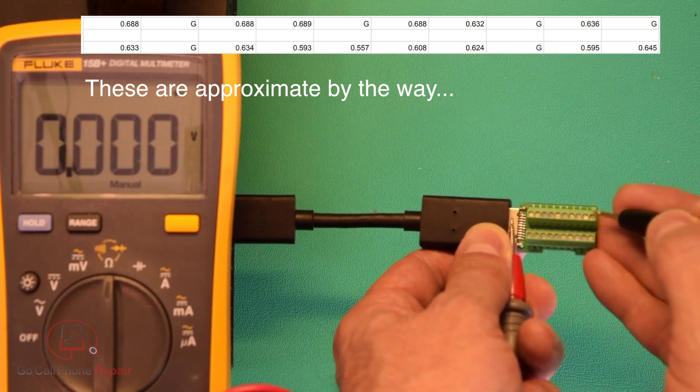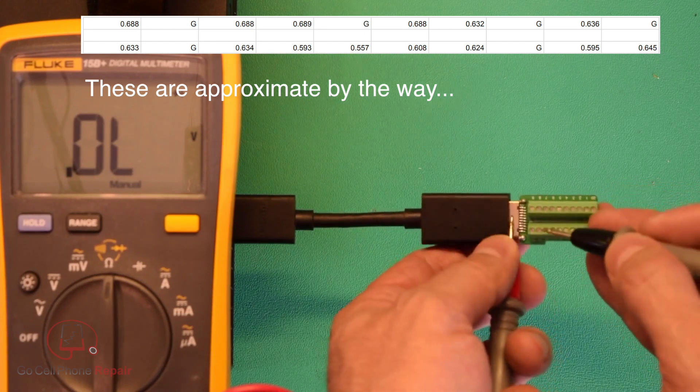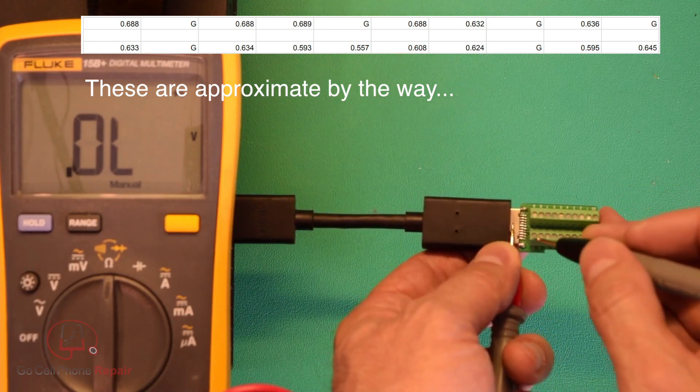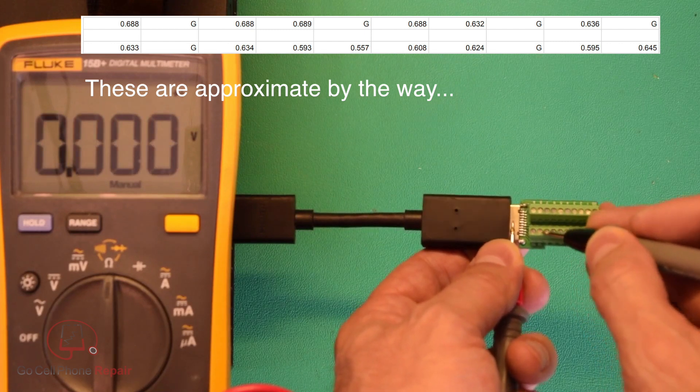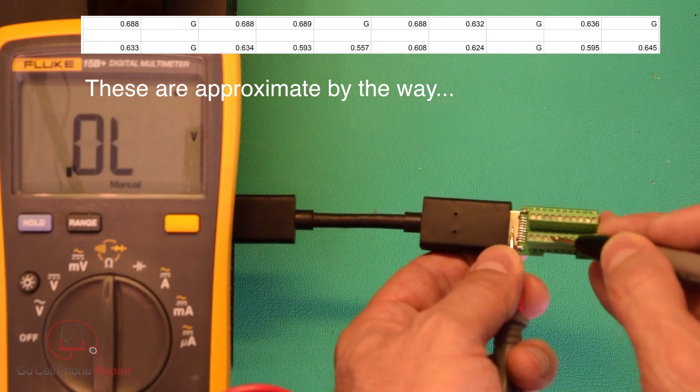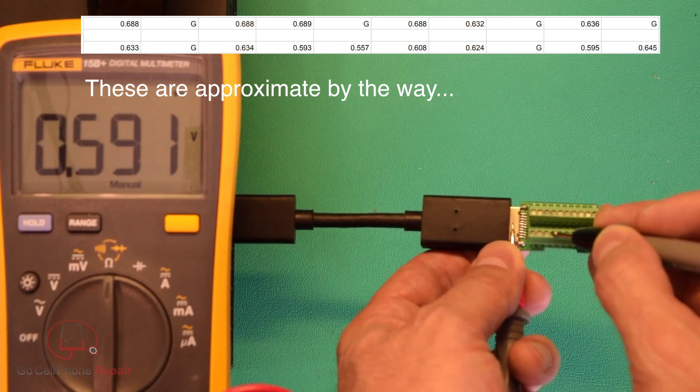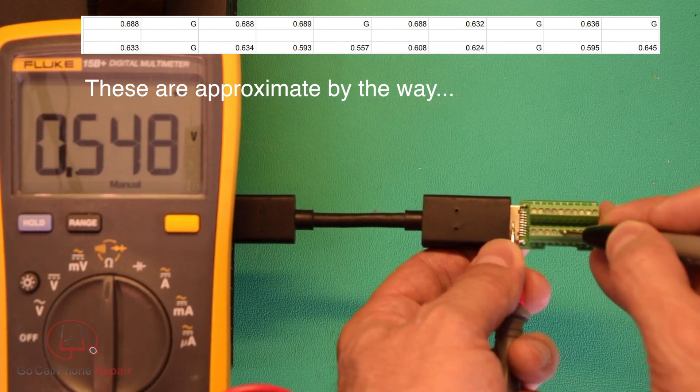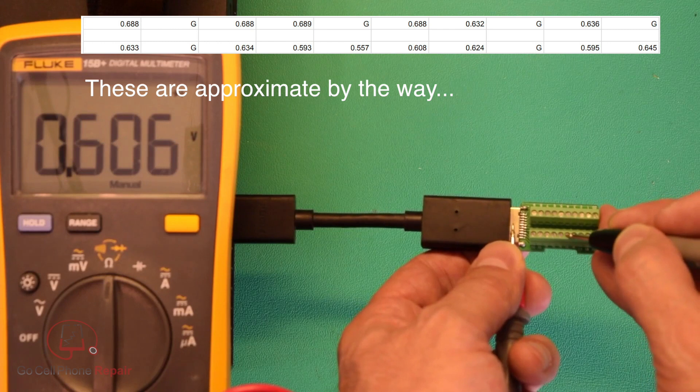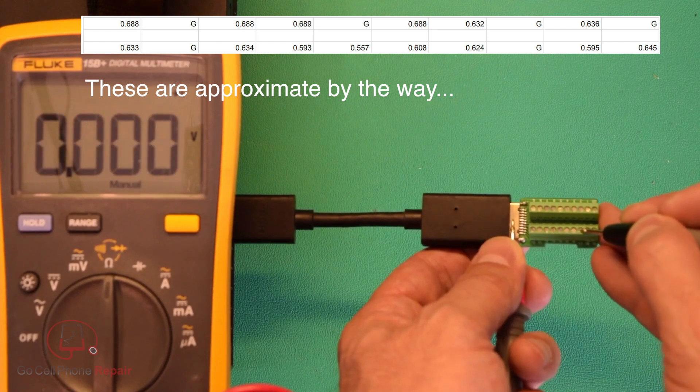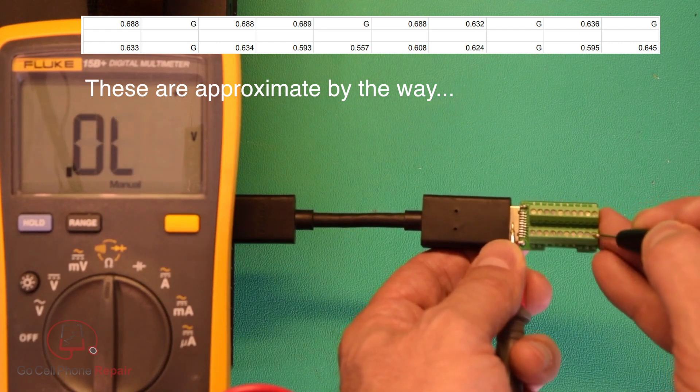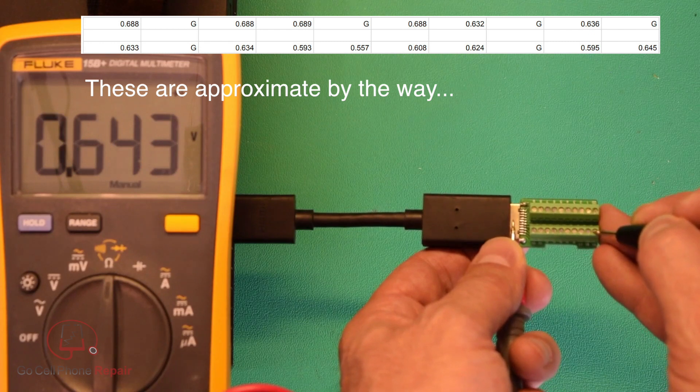Except for on this bottom row here, where we're going to have 625, ground, 625, 591, 548, 606. You see there's no ground there where you thought there might be. And 622, ground, 594, and 643.